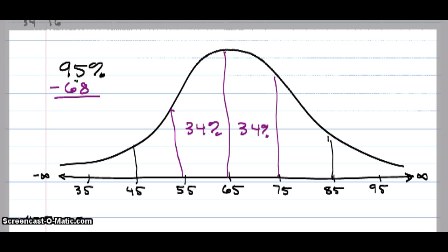If I subtracted out the middle 68%, which we split into 34 and 34, that's going to leave me with 27%. If I divide that 27 in half, I have 13.5% in each of these slices.